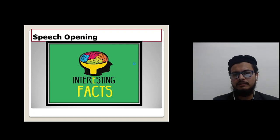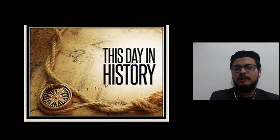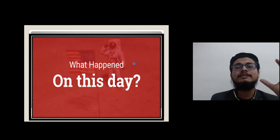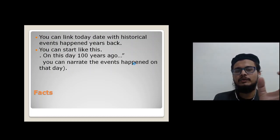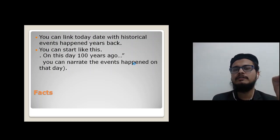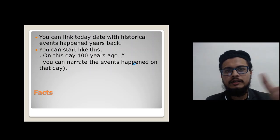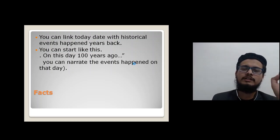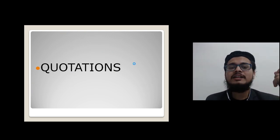Number one method: tell them interesting facts — something which the audience don't know. You can start like this: 'This day in history.' Tell them what exactly happened on this day in history. You can say 'On this day 50 years ago' and then narrate events which happened 50 years back, two years back, or 10 years back, and relate the whole story to your topic.